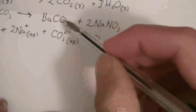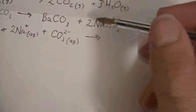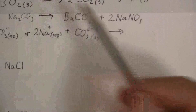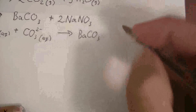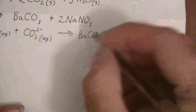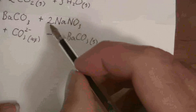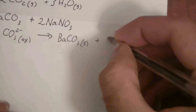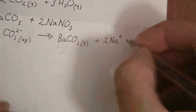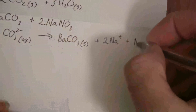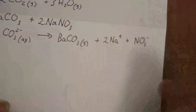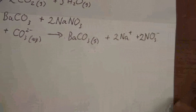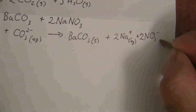On the product side, carbonates are generally insoluble, and barium is no exception unlike the alkali metal exception. So BaCO3 is our precipitate — since it's a solid, we write it as a solid and don't break it apart. Sodium nitrate is soluble, so we have 2 sodium ions and 2 nitrate ions. We don't break up the polyatomic ions — and those ions are aqueous.